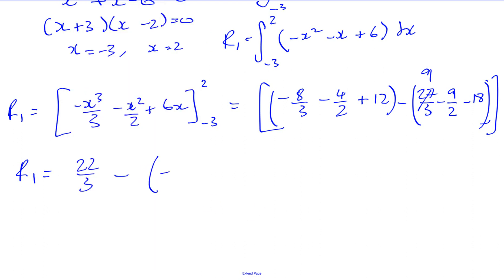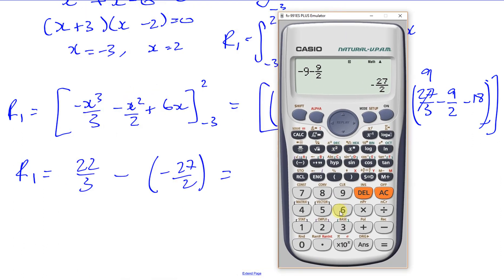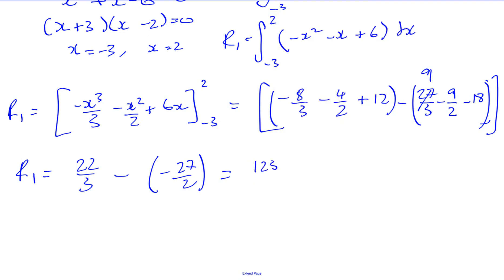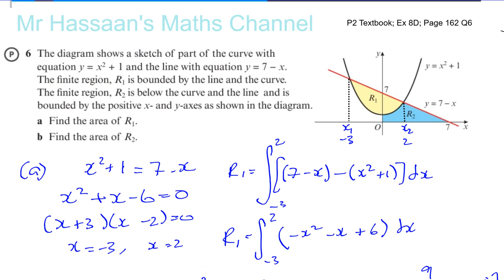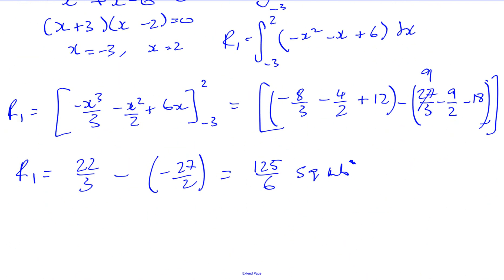So we have 22 over 3 minus negative 27 over 2, which gives 125 over 6 square units. That's the answer for R1. No need to round it — 125 over 6 is fine.